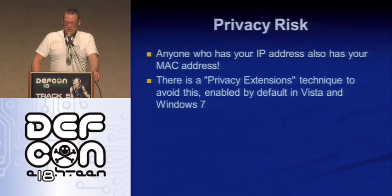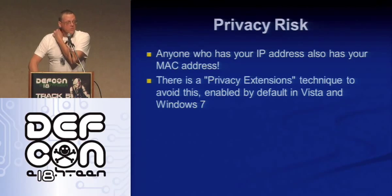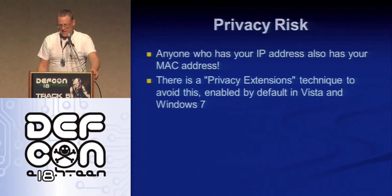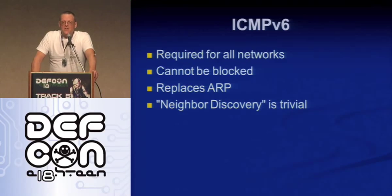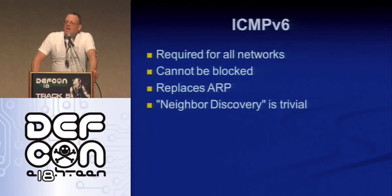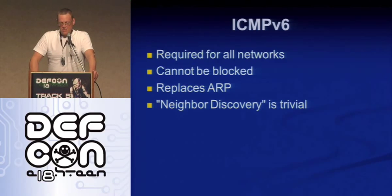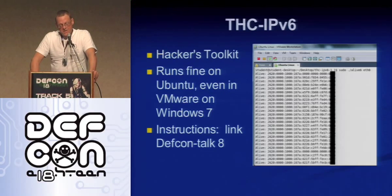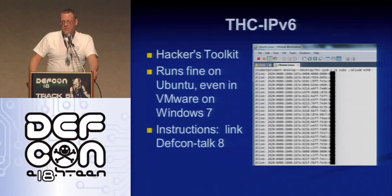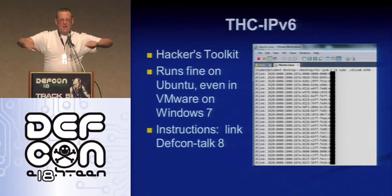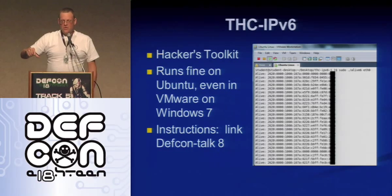Therefore, if you were to do something naughty like download copyrighted material, they would know who you are much better than if all they have is an IPv4 address. Windows Vista and Windows 7 have privacy extensions turned on by default, so they make up a random number instead of using the recommended EUI — which also tends to break end-to-end addressing, but does protect your privacy. Many companies prefer to turn that off so they can tell who's connecting and have per-user policies. Also, ICMPv6 — good old ping — is optional in IPv4 and everyone blocked it, but in IPv6 you must have it because it replaces ARP.